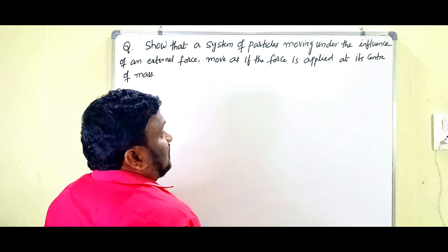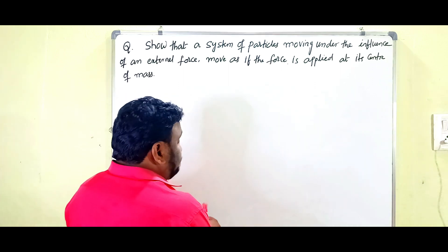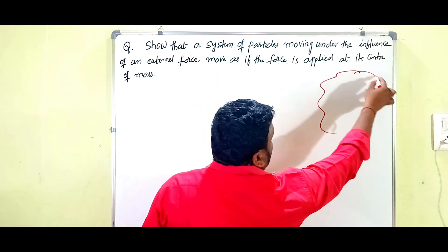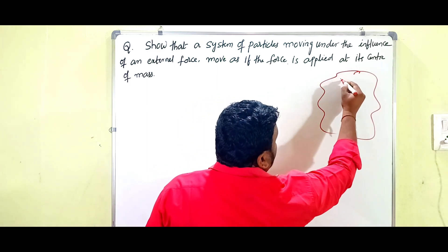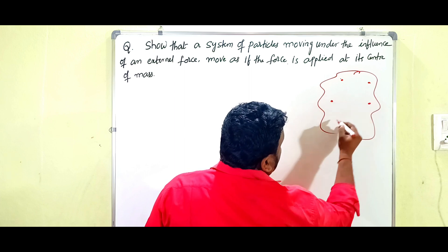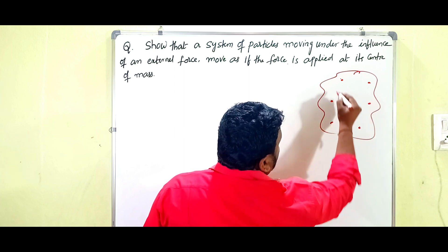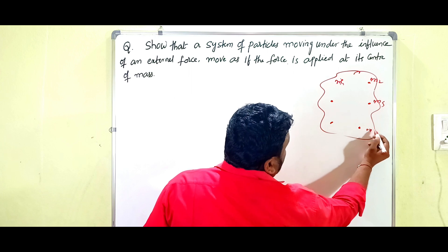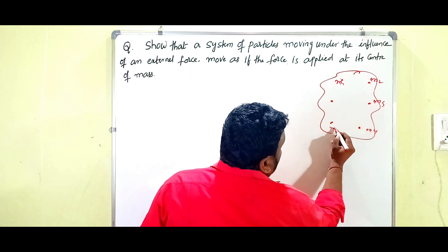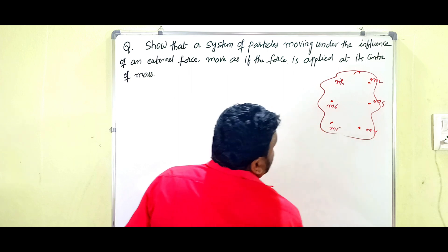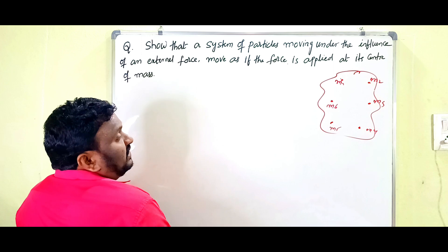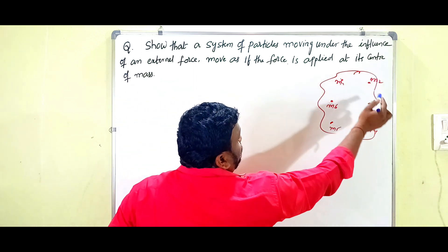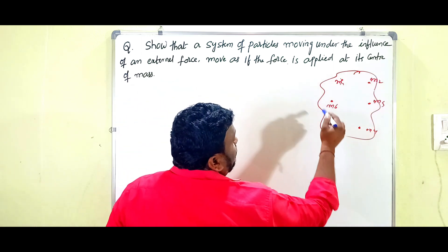For example, here this is the body that should be having some particles like m1, m2, m3, and so on. A system consists of a number of particles m1, m2, m3, m4, m5, m6, and so on.